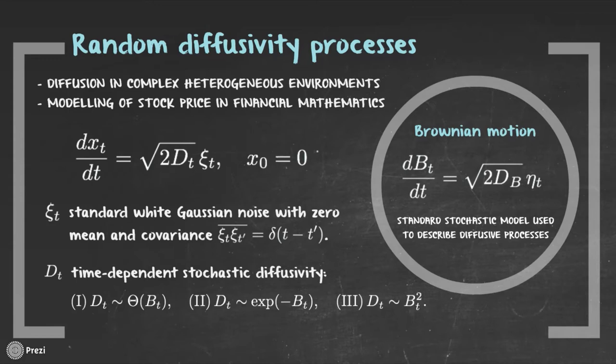In model one, we have D_t equal to theta of Brownian motion, where theta represents the Heaviside step function. In model two, we have D_t equal to the exponential of minus Brownian motion. And finally, in model three, we have D_t as the square of Brownian motion.